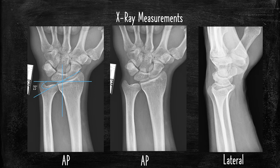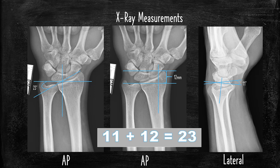First is 23 degrees of radial inclination. Next is going to be 12 millimeters of radial height and 11 degrees of volar tilt. These are all the normal parameters that you need to remember, and the easiest way to remember this — just remember the math equation: 11 plus 12 equals 23.